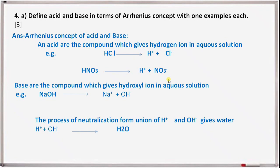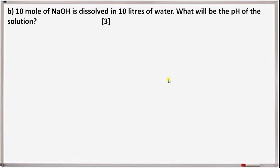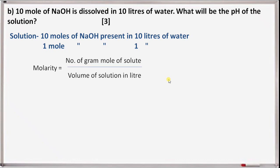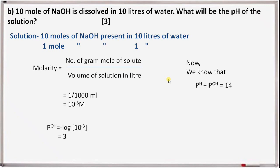Next question B: 10 moles of NaOH is dissolved in 10 liters of water. What will be the pH of the solution? 10 moles of NaOH in 10 liters means 1 mole per liter. Molarity equals 1 mole per liter, that is 10⁻³ M. POH equals minus log[OH⁻] equals minus log(10⁻³) equals 3. We know pH plus POH equals 14, so pH equals 14 minus 3 equals 11.